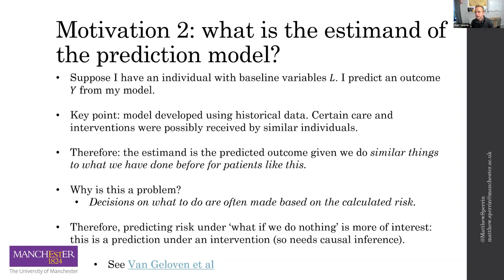The reason this is a problem is that it doesn't seem that people interpret these models in that way. Typically, these models are interpreted as what the predicted risk would be if we don't do anything. So if we calculate a cardiovascular risk of 20%, we assume that's what happens if you don't try to lose weight or lower your blood pressure. But actually that could be the risk even despite your efforts to reduce blood pressure and lose weight. That is arguably not very intuitive, and it's perhaps more useful if these prediction models were to report the predicted risk assuming we did nothing. But to produce such a prediction, we need causal inference methodology, because 'doing nothing' is an intervention and we're thinking explicitly about what happens under that intervention.